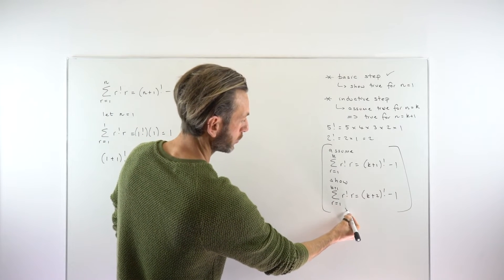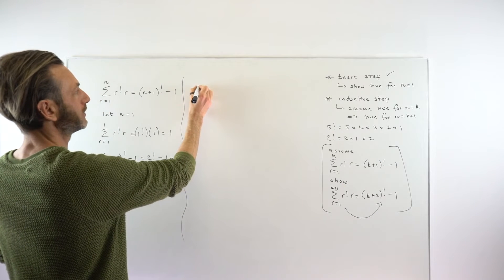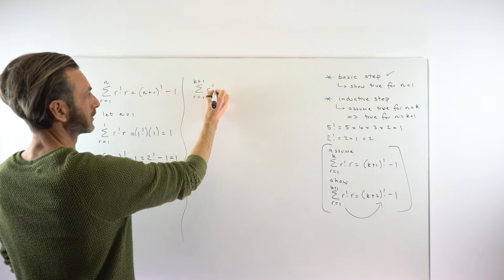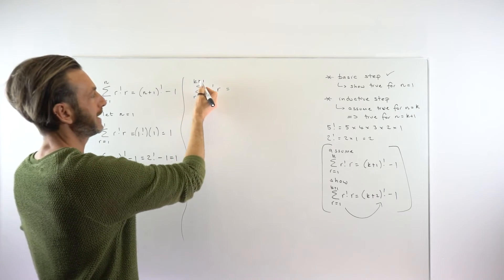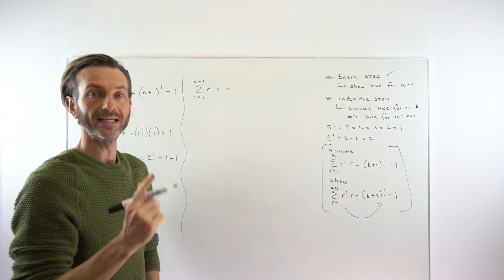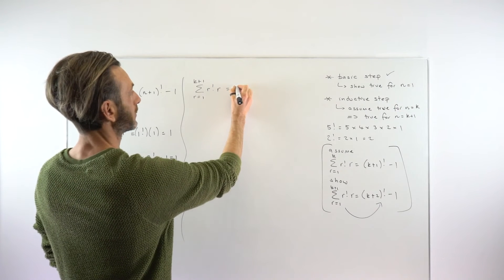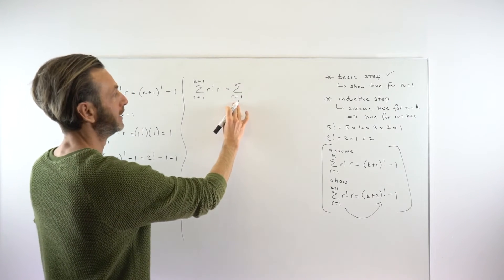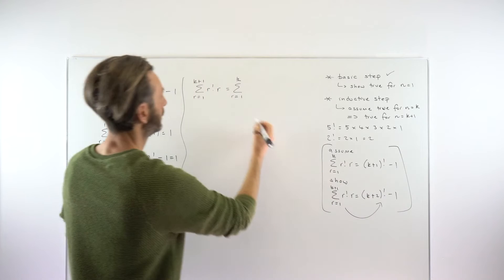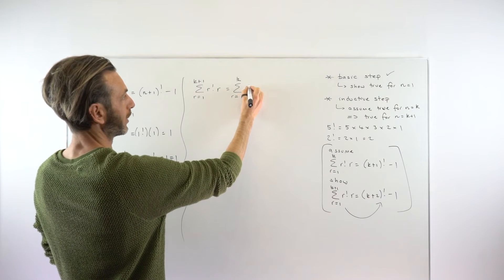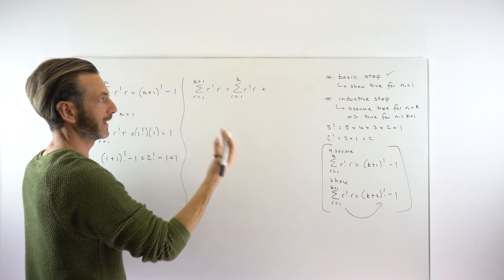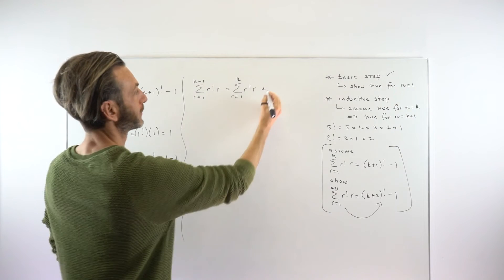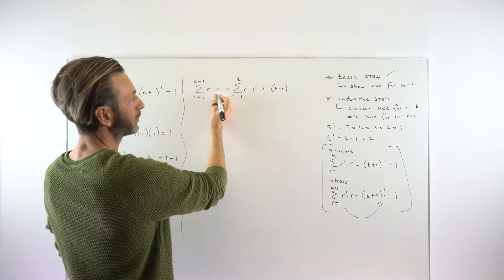We want to start with the sum from r equals 1 to k plus 1 of r factorial times r, and show we can turn that into k plus 2 factorial minus 1. This is a sum from 1 to k plus 1, and we're going to split that as a sum from 1 to k plus that final term — the k plus 1th term. This is a really common method in questions involving summations. We split off the first k terms so that we can use our assumption. So that's the sum from r equals 1 to k of r factorial r, plus the final term, which is k plus 1 factorial times k plus 1.